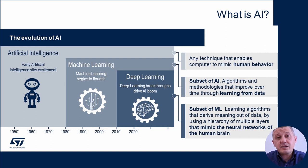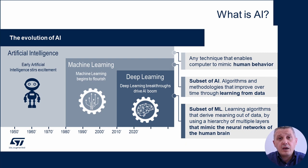There is another subset of machine learning called deep learning, which is the most complex and advanced algorithm. Not only does it learn from data, but it also has a structure that mimics the neural network of the human brain.